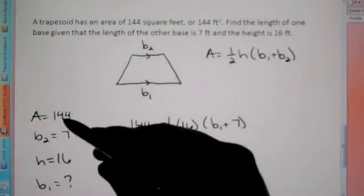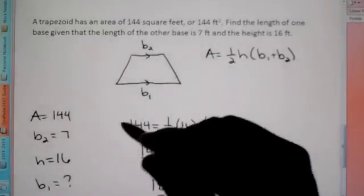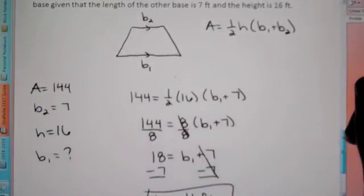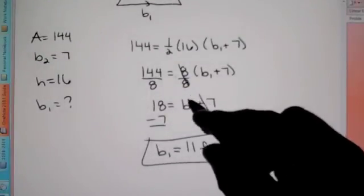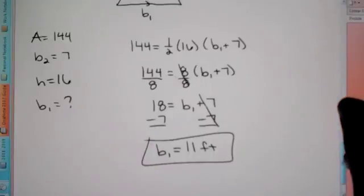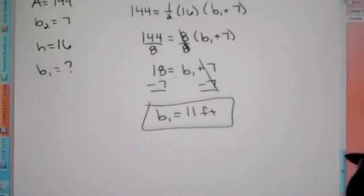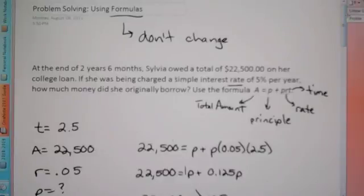That is how you do it. Find the formula, figure out the formula, establish values for each variable. There's going to be one variable we don't know — that's the one we need to solve for. Plug into the formula exactly how it's written, then isolate the variable, get the variable by itself. That is how we solve word problems using formulas. Good luck with that, have a good day.